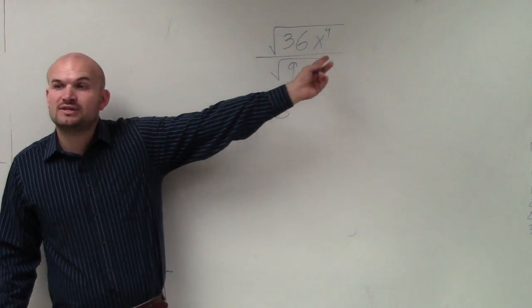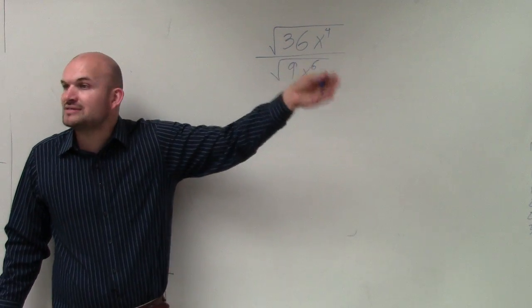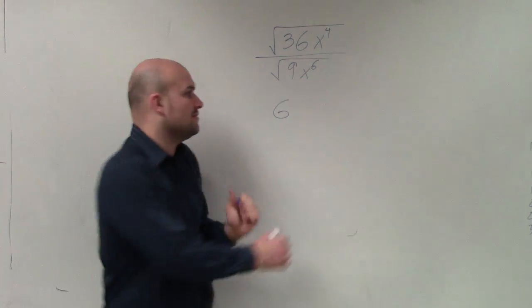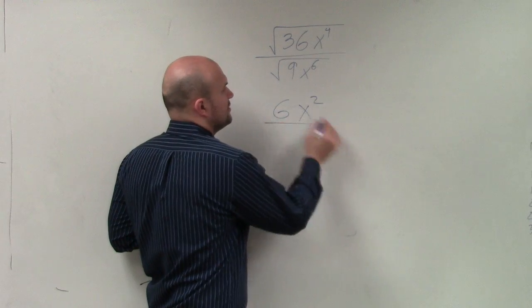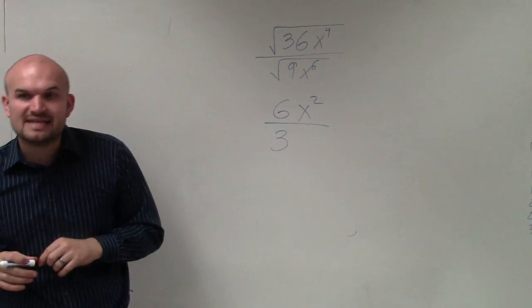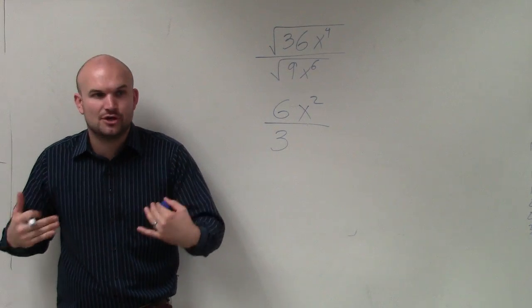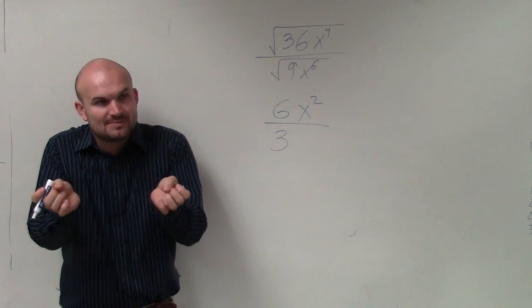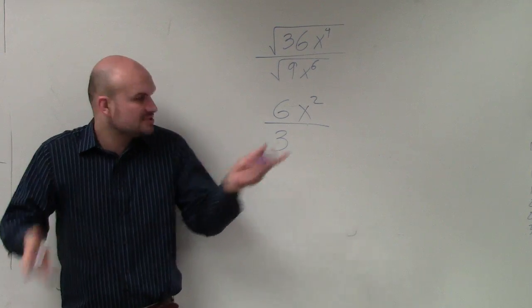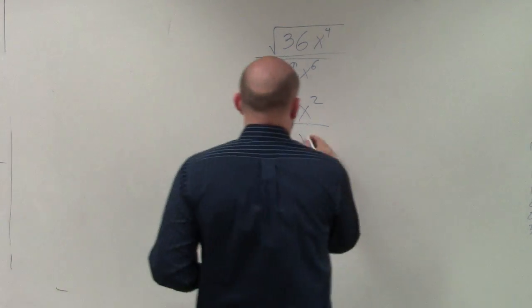The square root of x to the fourth is x squared, because x squared times x squared equals x to the fourth. The square root of 9 is 3. And the square root of x to the sixth is x cubed, because x cubed times x cubed—remember, when you multiply exponents, you add the powers—3 plus 3 is 6. So therefore, I get x cubed.